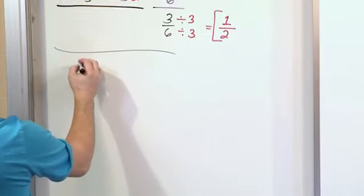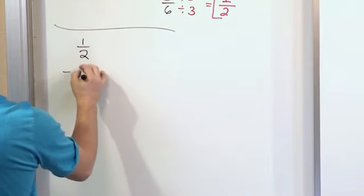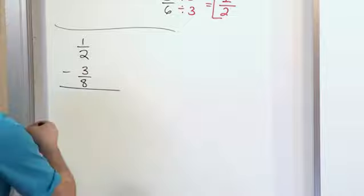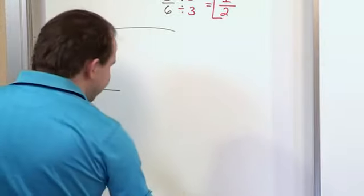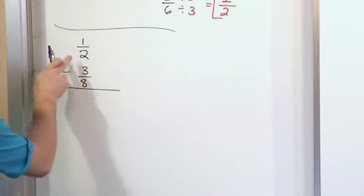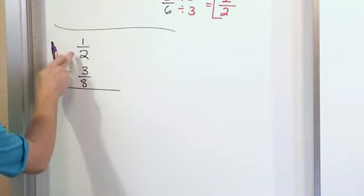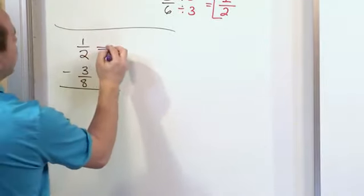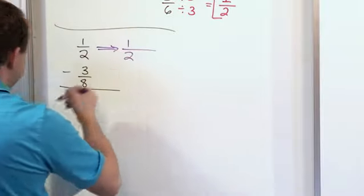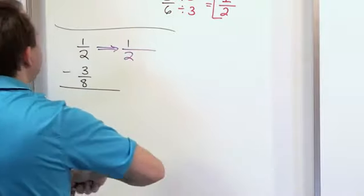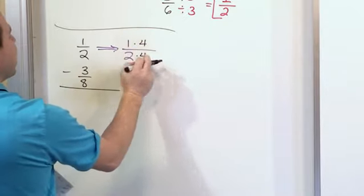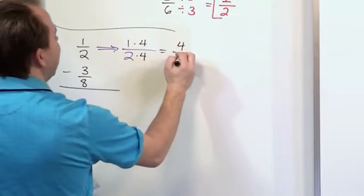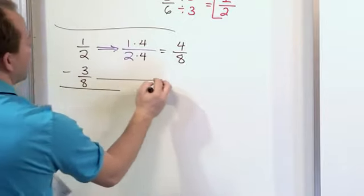Let's say we have 1 half and we're subtracting from it 3 eighths. So again we check the denominators. We have a 2 and we have an 8. So that's not going to really work. But we see right away that 2 times 4 is 8. So I can transform this fraction to have a common denominator by basically taking the fraction 1 half and I'll multiply the bottom by 4 and the top by 4. The reason I'm multiplying by 4 is because then I'll have 4 eighths.